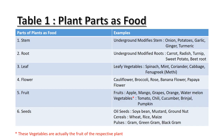The fourth part is flower. Some commonly consumable flowers are cauliflower, broccoli, rose, banana flower, and papaya flower. The next part is fruit. Common fruits like apple, mango, grapes, orange, and watermelon are known to all of us. However, some vegetables like tomato, chili, cucumber, brinjal, and pumpkin are actually the fruit of their respective plants, which we consume as vegetables.